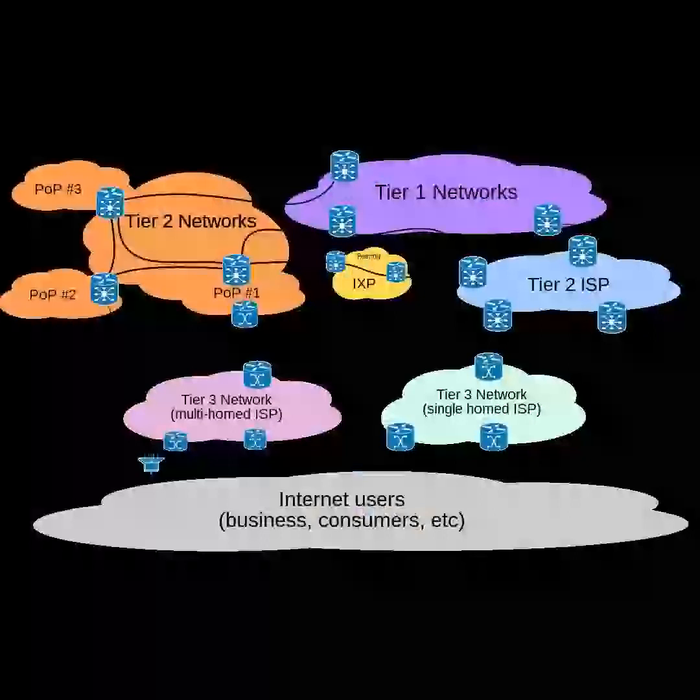At the bottom of the architecture is the link layer, which connects nodes on the same physical link, and contains protocols that do not require routers for traversal to other links. The protocol suite does not explicitly specify hardware methods to transfer bits or protocols to manage such hardware, but assumes that appropriate technology is available. Examples of that technology include Wi-Fi, Ethernet, and DSL.